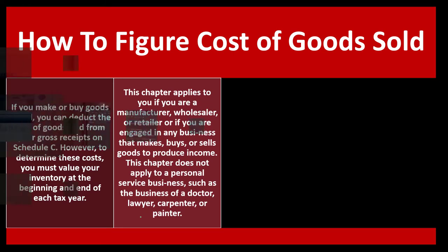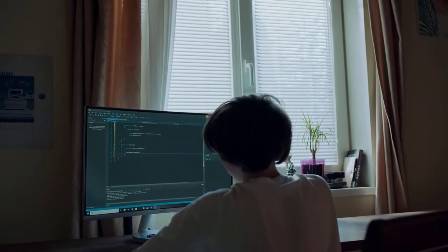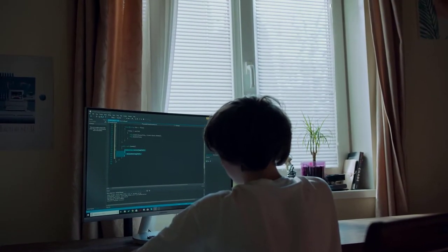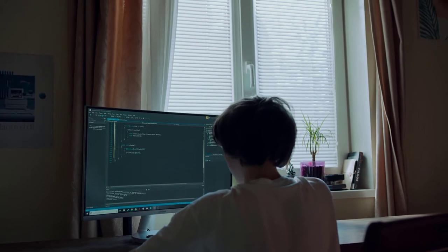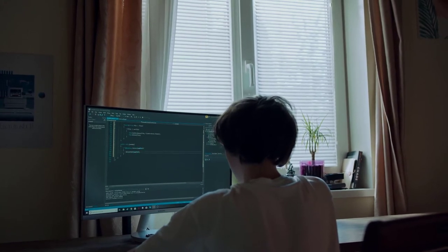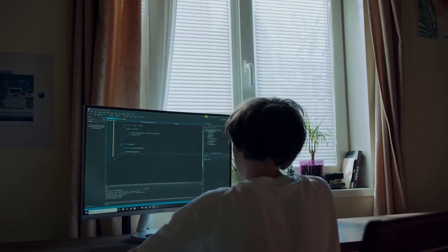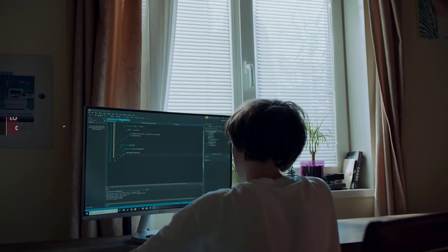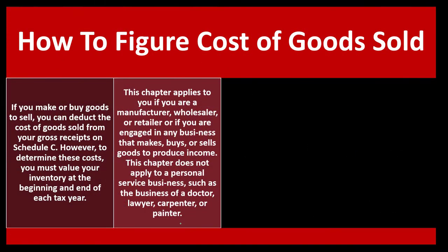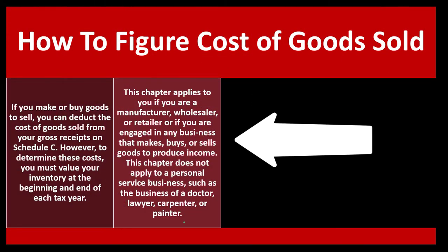If you're using accounting software, you might not have this calculation directly in the software, so you may have to back into it to ensure you have the detailed information. This chapter applies to you if you are a manufacturer, wholesaler, retailer, or if you are engaged in any business that makes, buys, or sells goods to produce income.